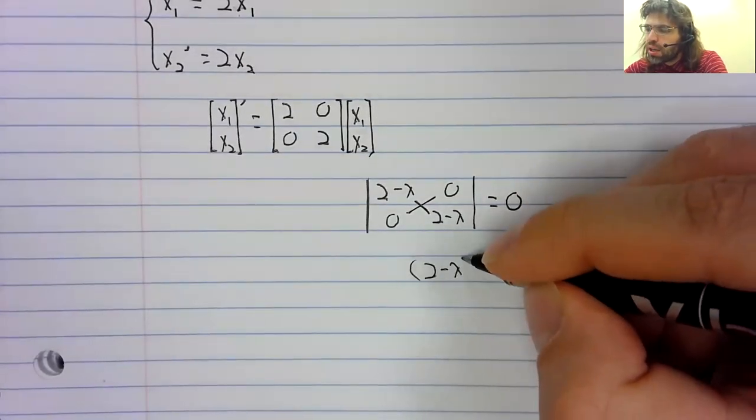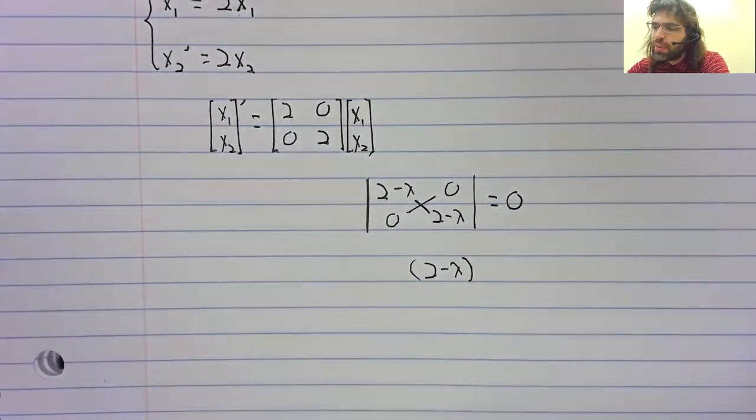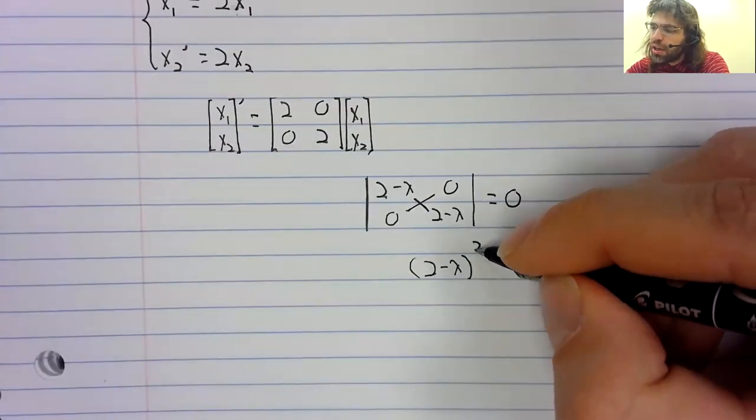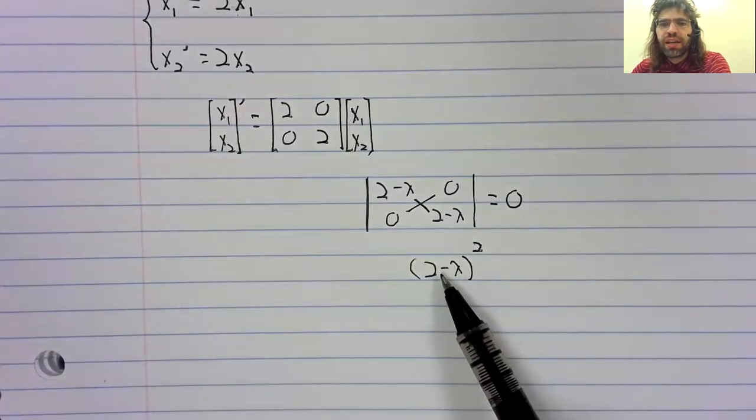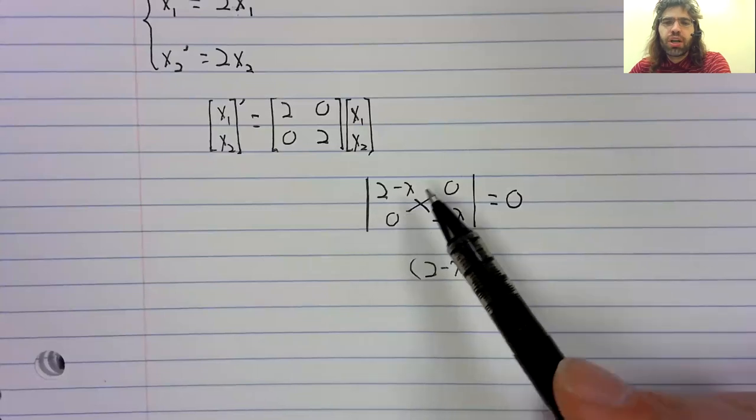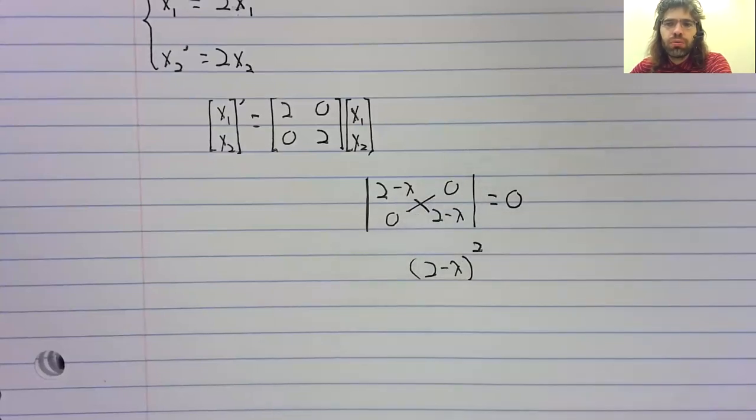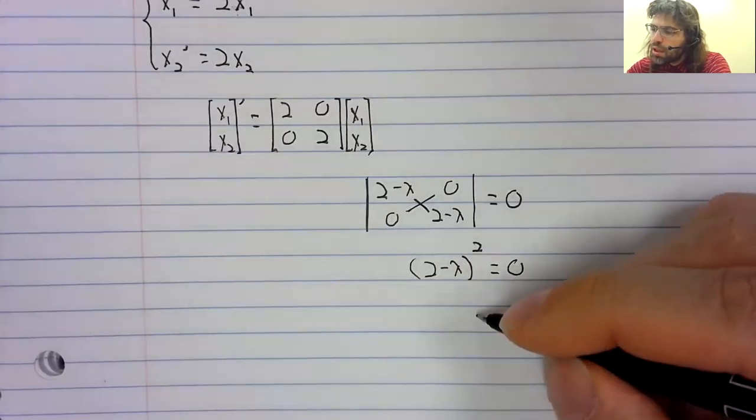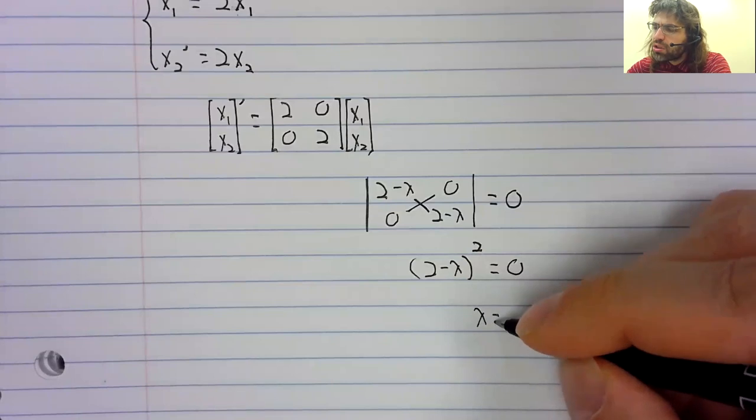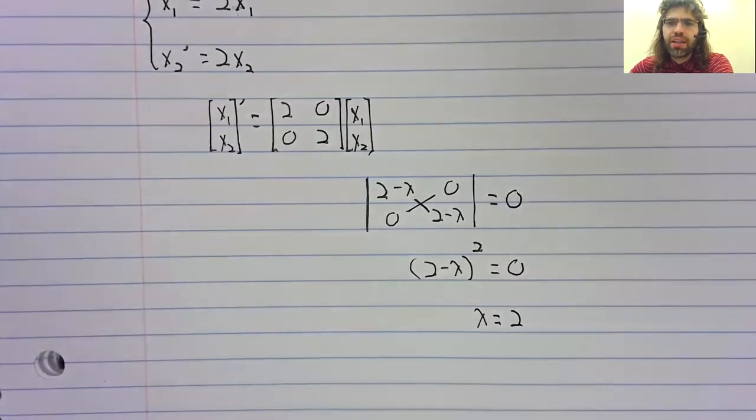We multiply the diagonal elements and the anti-diagonal elements and subtract them. There's the product of the diagonal elements. The product of the anti-diagonal elements is zero. And we get a single eigenvalue.